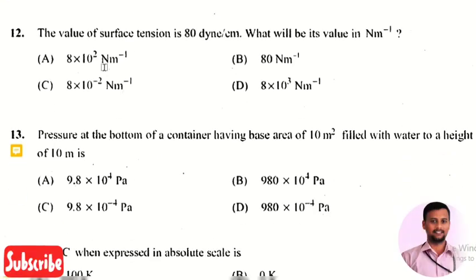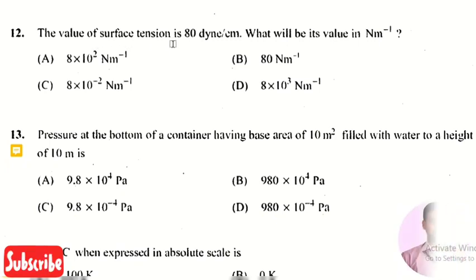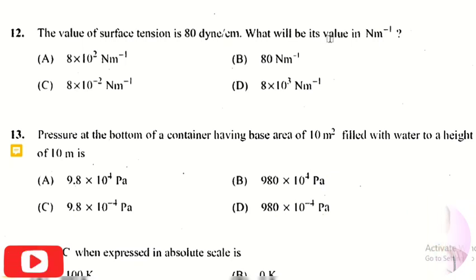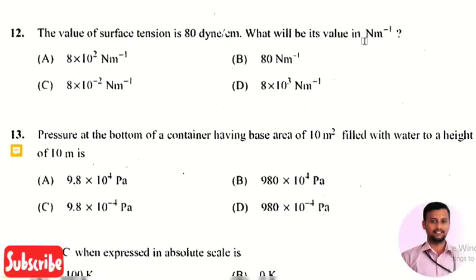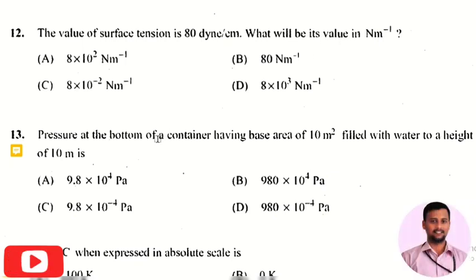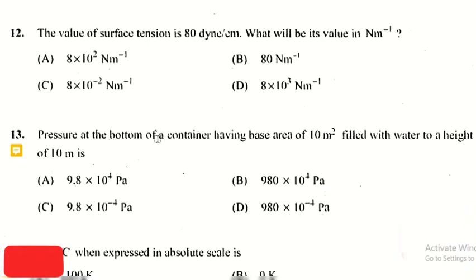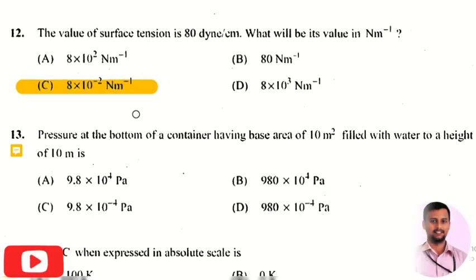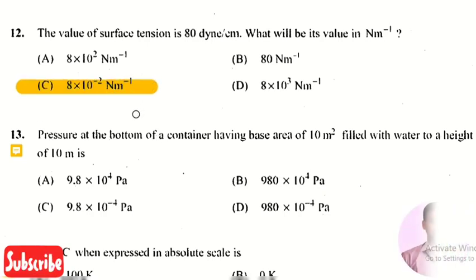The next question: the value of surface tension is 89 dyne/cm — what will be its value in N/m? The right answer is option 3, that is 8 × 10⁻² N/m.